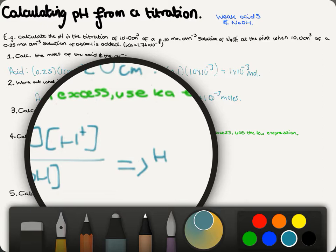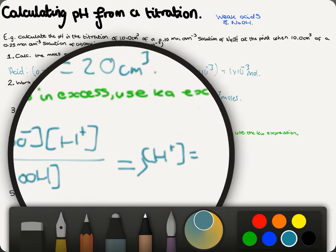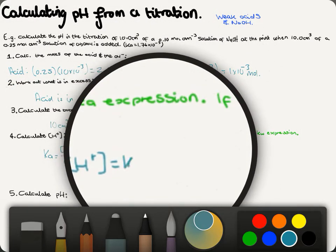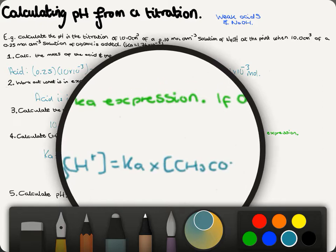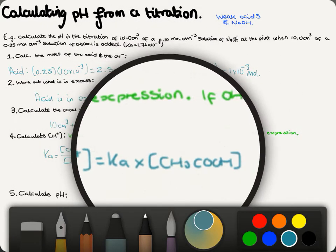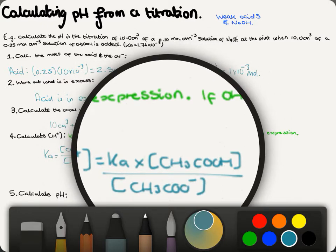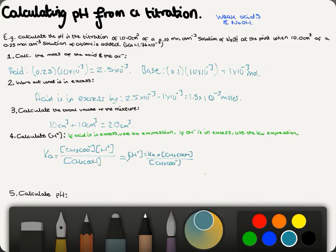Rearrange this to give H⁺: H⁺ = Ka × [CH₃COOH] / [CH₃COO⁻]. Note that we're now working in concentrations, not moles, so we need to divide our moles by the total volume to get concentrations.